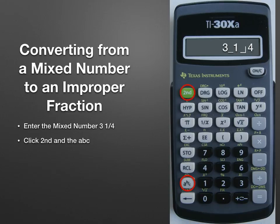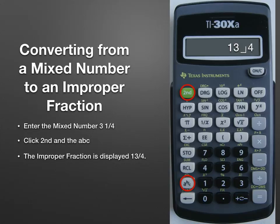Next, we click the second key and the abc key, and that improper fraction is displayed 13 fourths. 13 fourths is the same as 3 and 1/4.